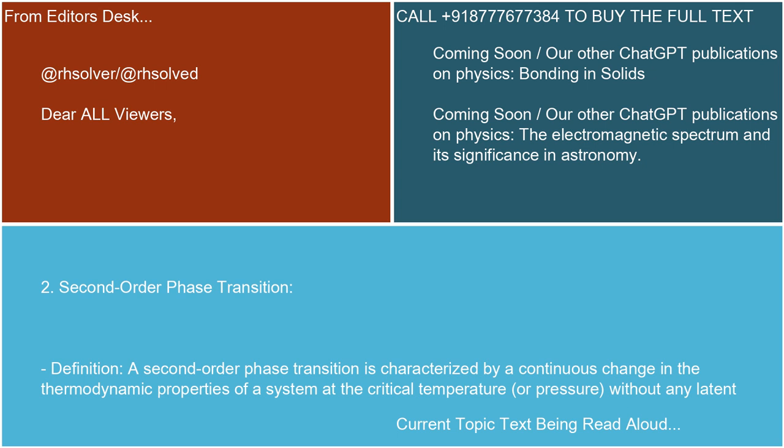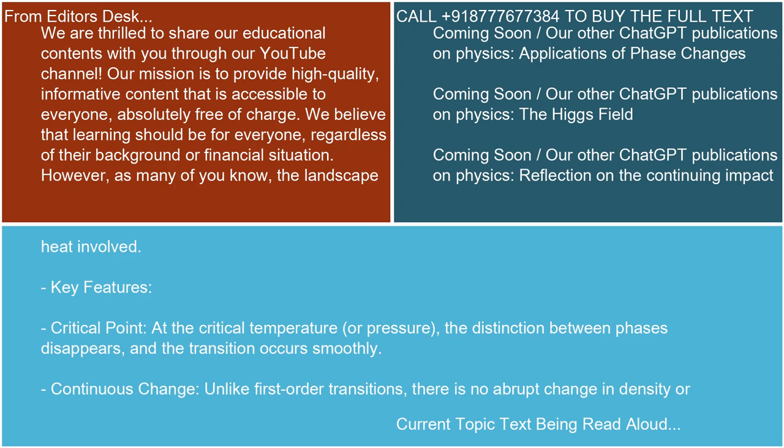Two. Second-order phase transition. Definition: A second-order phase transition is characterized by a continuous change in the thermodynamic properties of a system at the critical temperature or pressure, without any latent heat involved.